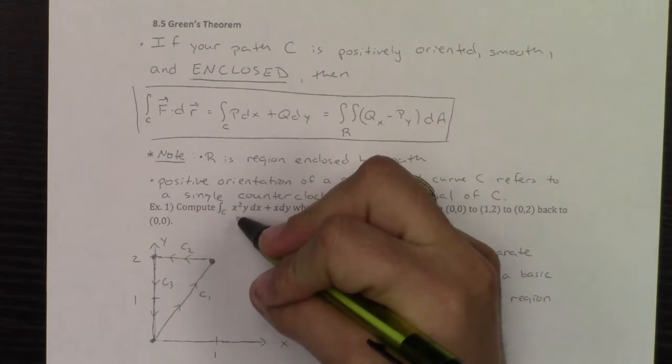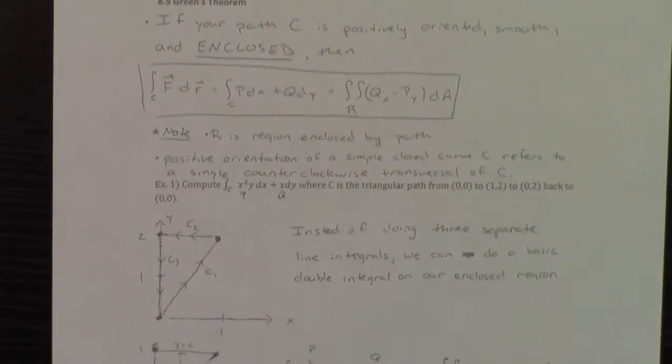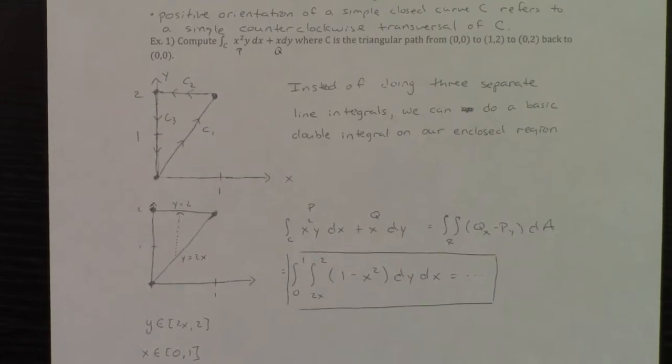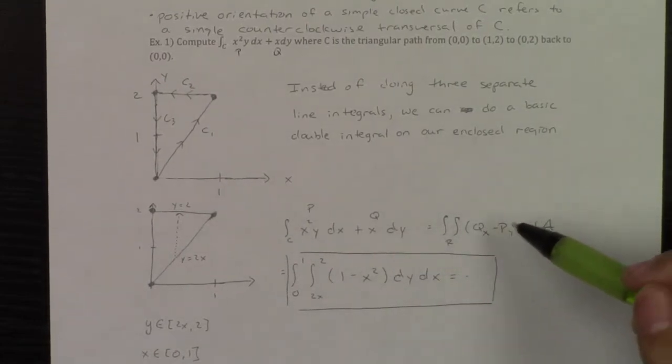Now this is going to represent my p, this is going to represent my q, and so instead how about we just do a basic double integral of qx minus py.